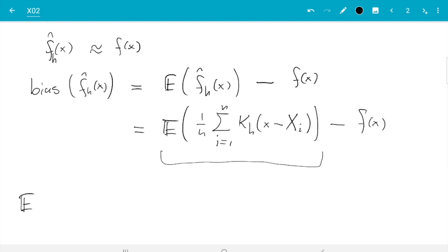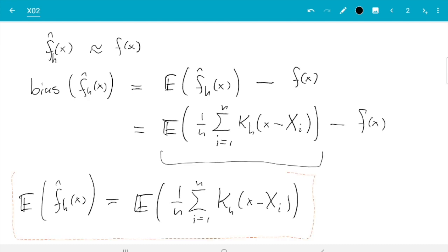So let's see what we can do with this expectation of f hat h(x). It's expectation of one over n sum i from one to n, k_h(x minus Xi), and the first thing we can do is we take the sum out of the expectation.